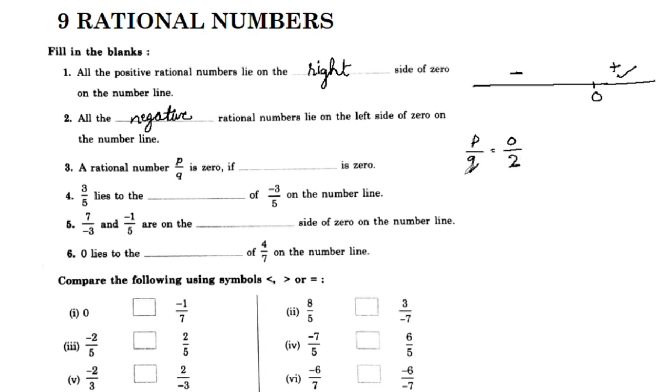For a rational number p by q, q is not equal to 0 - that is the rational condition. If p by q equals 0, then p is 0.